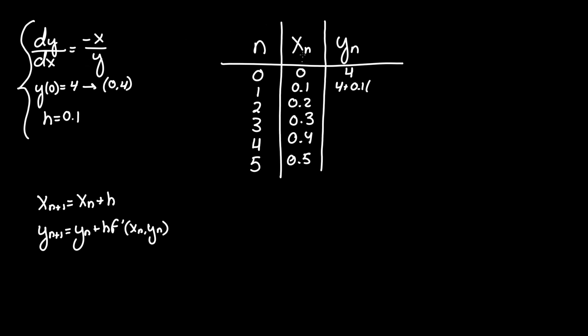Right, because x of n equals zero, so it would be negative zero over y of zero, which was four, which obviously turns into zero. Multiplying that by 0.1 is zero, so it's just four plus zero which eventually equals four. So it's the same value. We can just see that the data point goes from zero comma four to zero point one comma four, so we're just shifting right a bit.